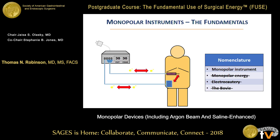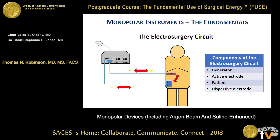So the monopolar instrument nomenclature — we didn't go over all the nomenclature, but this pops up. There's no such thing as monopolar energy; it's radiofrequency energy. A lot of folks will call it electrocautery, but we're actually passing current through the tissue. And Bovie is a trade name — it's a company's name, and ultimately it was an individual person's name. This nomenclature would be useful to know.